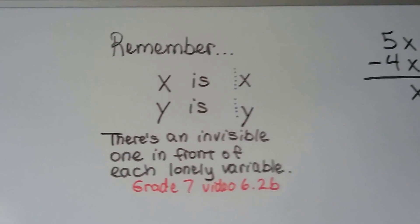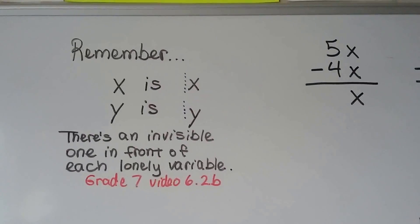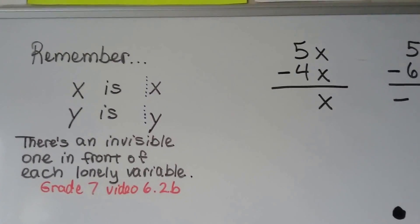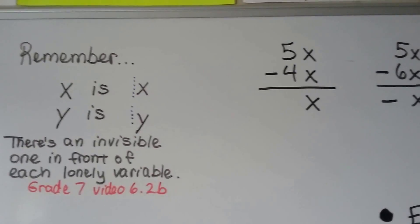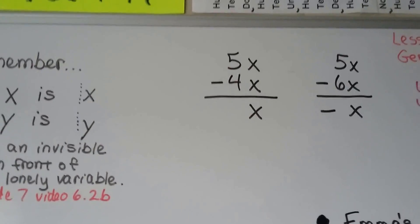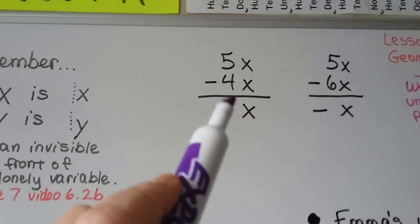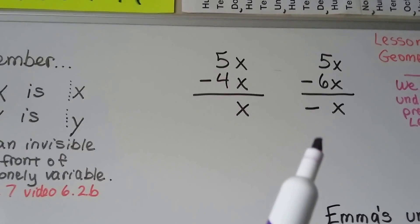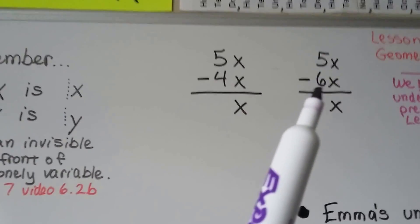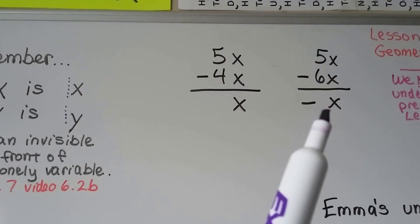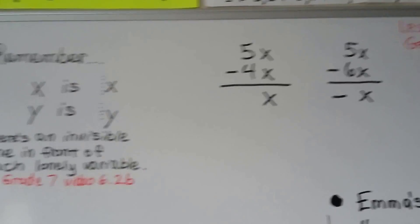When you see a lone variable like x, there's an invisible 1 in front of it — any variable. So if we have 5x minus 4x, then we're just going to write x. We don't write the 1. And if we have 5x minus 6x, well, that's taking away more than 5, so it's going to put us into the negative — we're going to have a negative x. We don't write the 1.